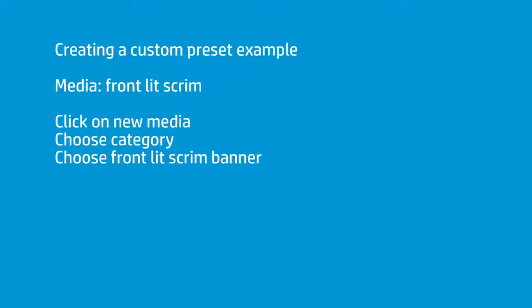You're going to go to the panel and create a new media. When you create the new media, it's going to ask you a category. What you're trying to do is pick a category that makes sense for what you're printing on. If you have a scrim banner, obviously you would choose scrim banner. Within scrim banners, there's backlit and there's frontlit. Let's assume you have a frontlit scrim banner — that's what most people have — so you would choose frontlit scrim banner from the panel.